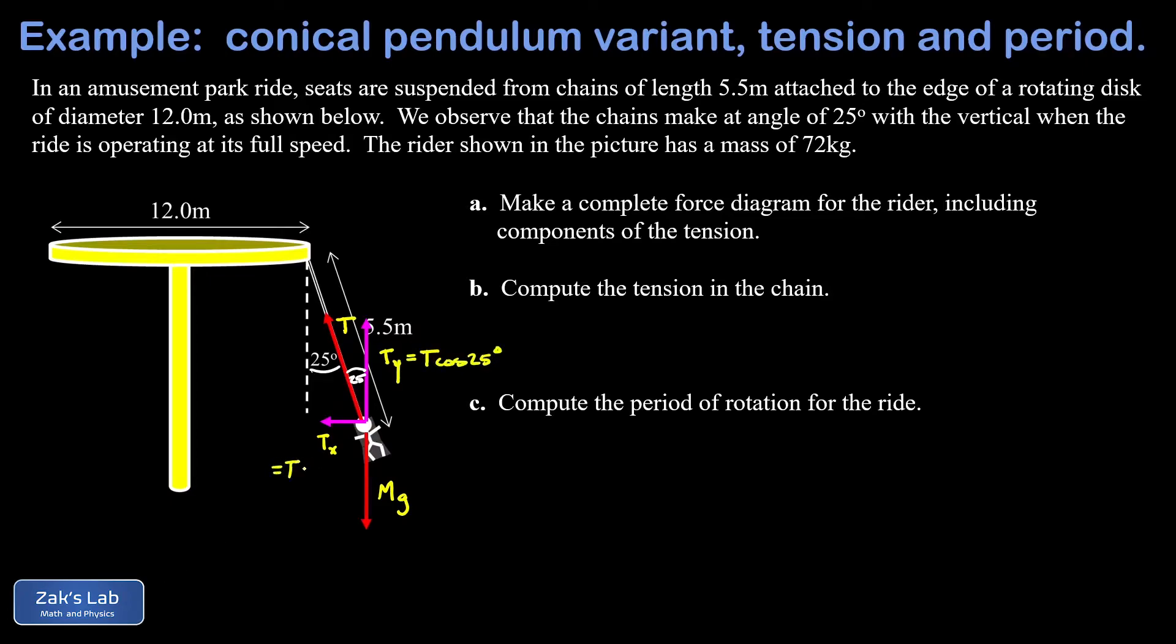In part B we want to get the tension in the chain. Here's where we use this physical fact: if someone's moving on a horizontal circular path, the vertical acceleration must be zero, and therefore the sum of all the forces in the y direction must vanish. In other words, the upward force that I see on this person, T cosine 25, better be equal to the downward force, which is mg.